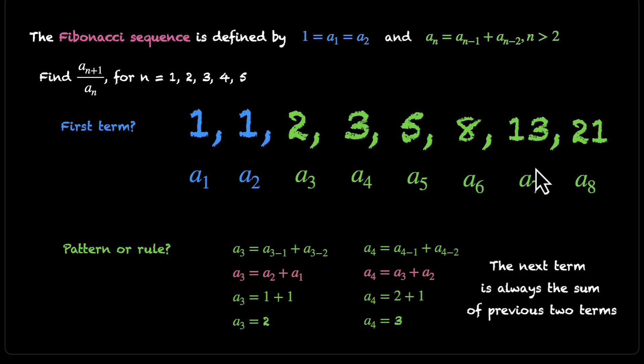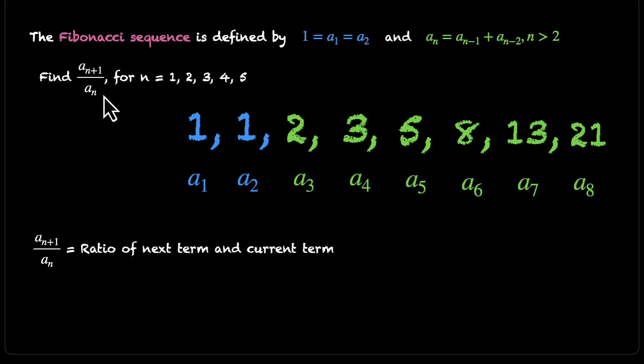Now that we've cracked the code and found the first few terms, let's figure out what the question is asking us to do. We're asked for an+1 by an, that's actually the ratio of the next term and the current term. Whatever value you put for n, you have to put the next value for an+1. This gives us the ratio of the next term and the current term. For n = 1, we have a2/a1, which is the second term by first term. The next one will be a3/a2, then a4/a3, then a5/a4, and then a6/a5. I'm glad we figured out the sixth term; we need it here.